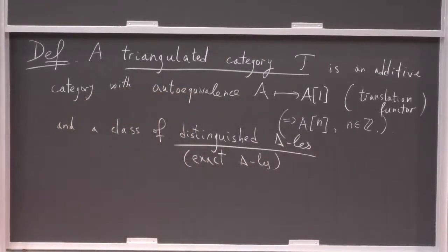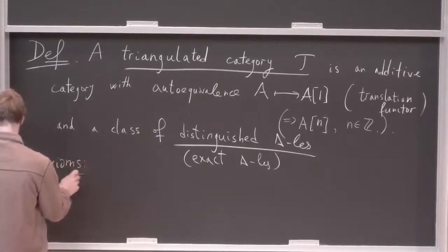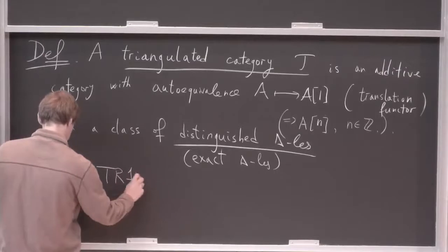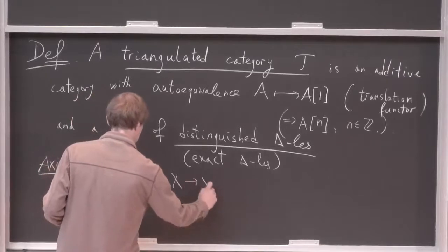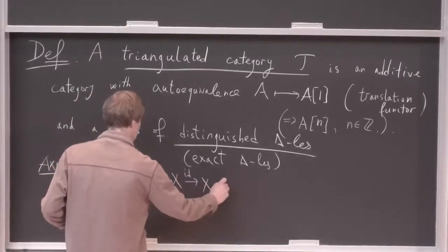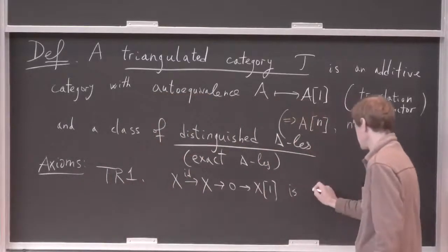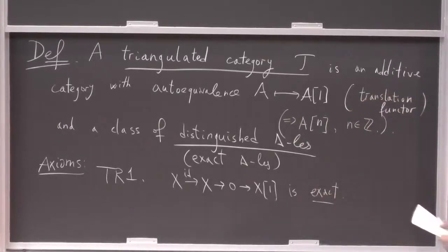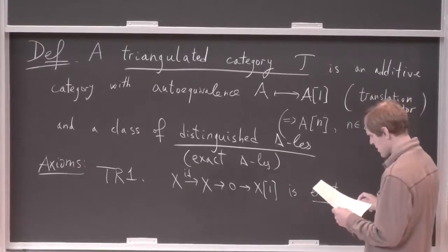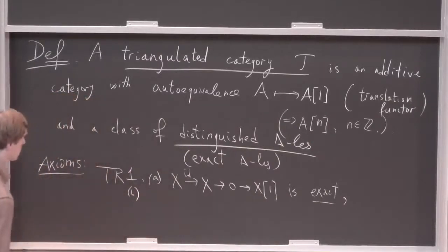This structure should satisfy the following axioms. The first axiom is rather basic: it says that X → X by the identity map → 0 → X[1] is distinguished, i.e., exact. I'll call them exact triangles.